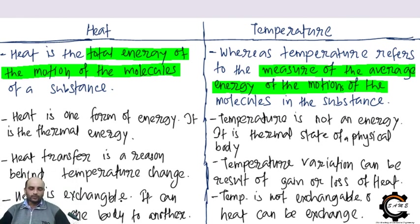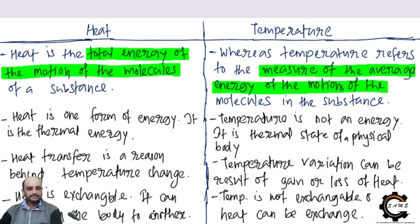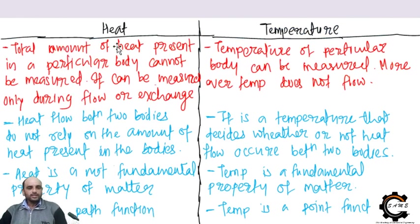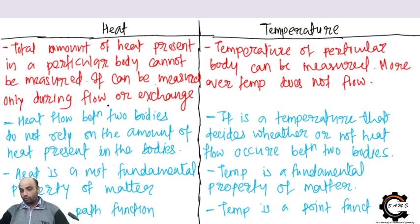If you are not understanding, please search Google for better clarity. The total amount of heat present in a particular body cannot be measured — it can only be measured during flow or exchange. Temperature of a particular body can be easily measured. Temperature does not flow; only heat flows.